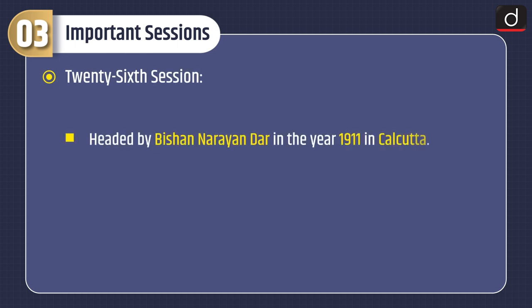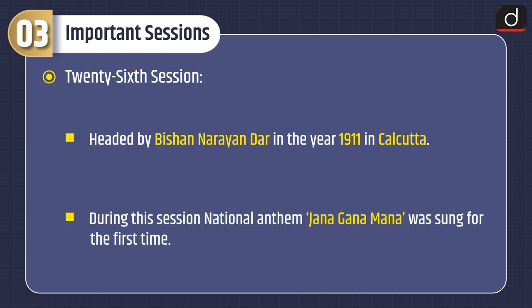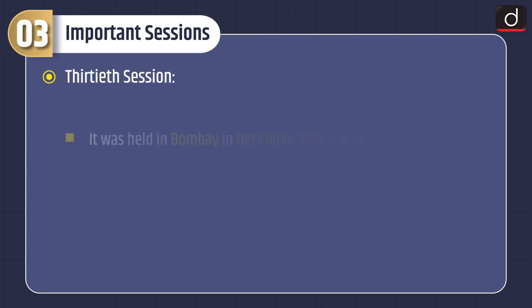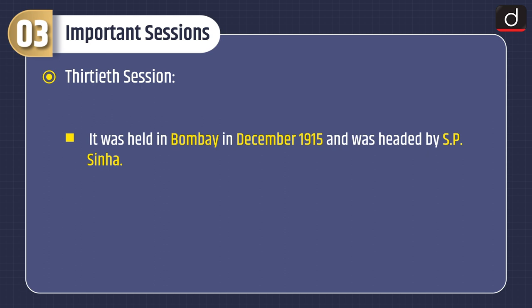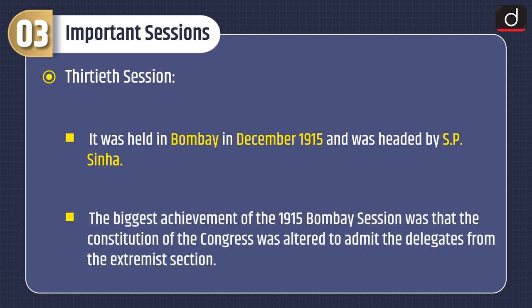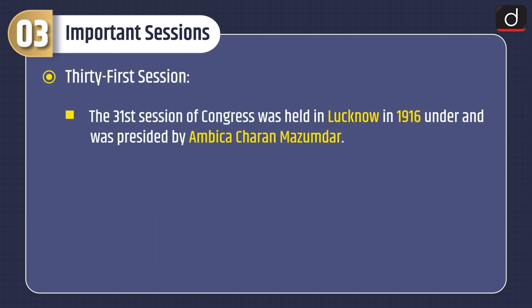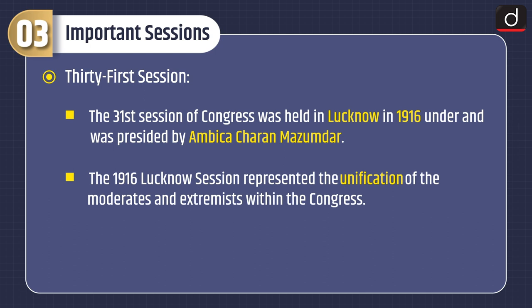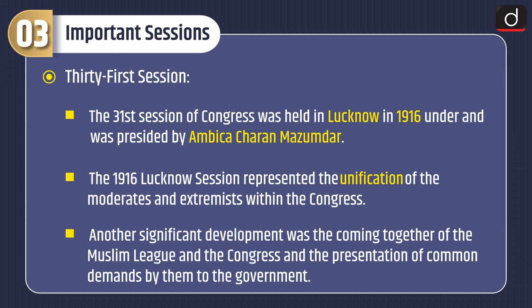Twenty-sixth Session: Headed by Bishan Narayan Dar in the year 1911 in Calcutta. During this session, National Anthem Jana Gana Mana was sung for the first time. Thirty-eighth Session: It was held in Bombay in December 1915 and was headed by S.P. Sinha. The biggest achievement of the 1915 Bombay session was that the constitution of the Congress was altered to admit the delegates from the extremist section. Thirty-first Session: The thirty-first session of Congress was held in Lucknow in 1916 and was presided by Ambika Charan Mazumdar. The 1916 Lucknow session represented the unification of the moderates and extremists within the Congress. Another significant development was the coming together of the Muslim League and the Congress and the presentation of common demands by them to the government.